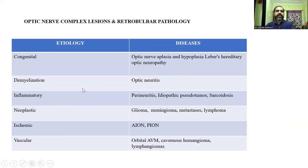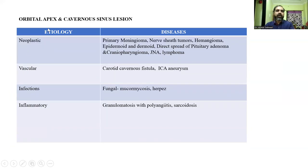Optic nerve complex lesions include congenital lesions like optic nerve hypoplasia, hyperplasia, demyelination like optic neuritis, inflammatory conditions such as perineuritis, and neoplastic lesions such as glioma, ischemic and vascular lesions. Orbital apex lesions include neoplastic, vascular, infectious and fibrous lesions.